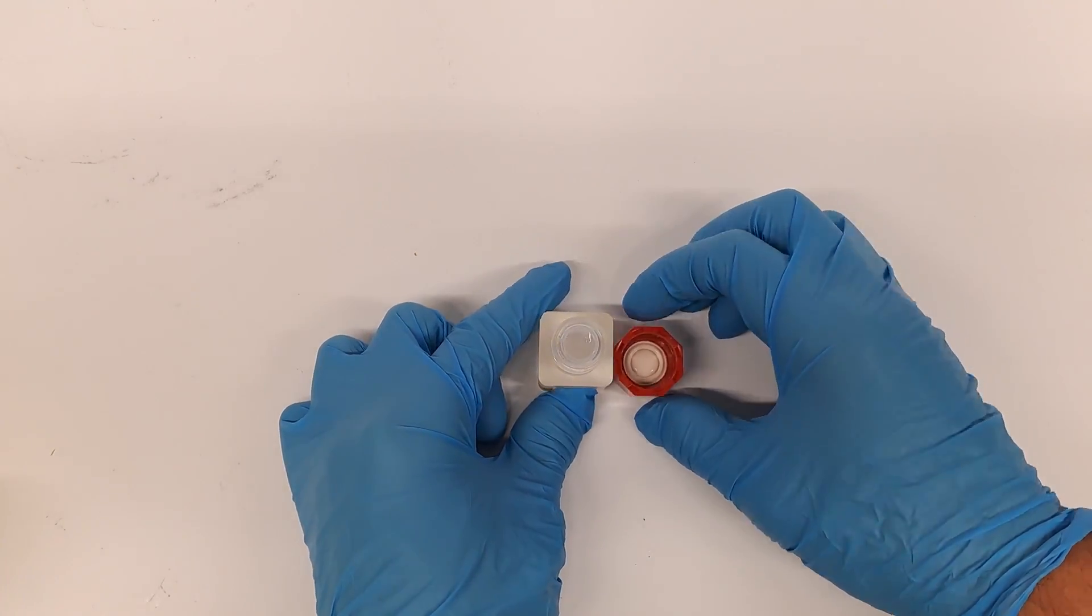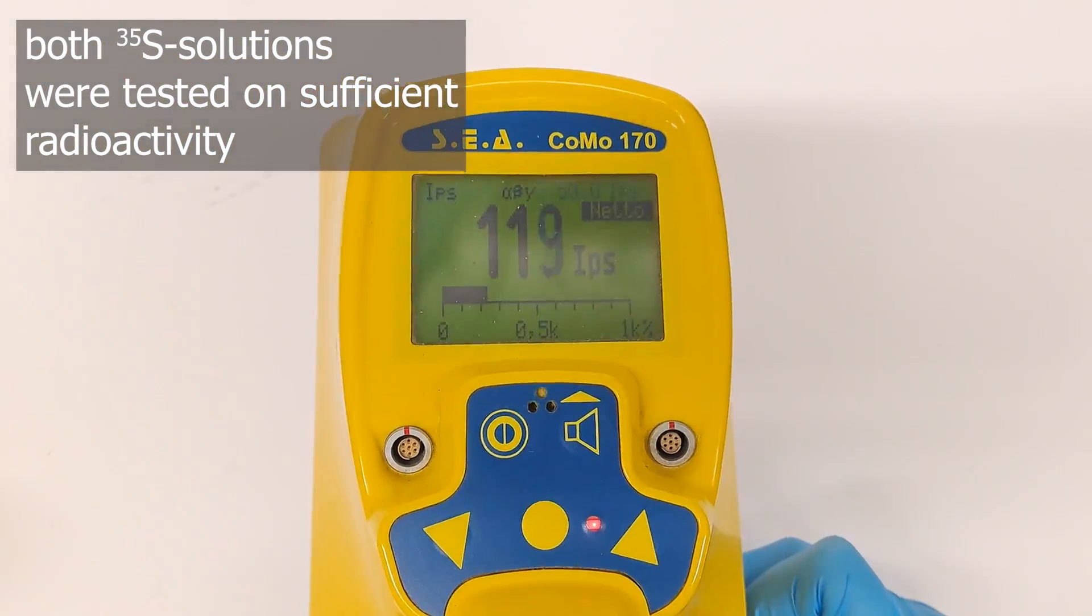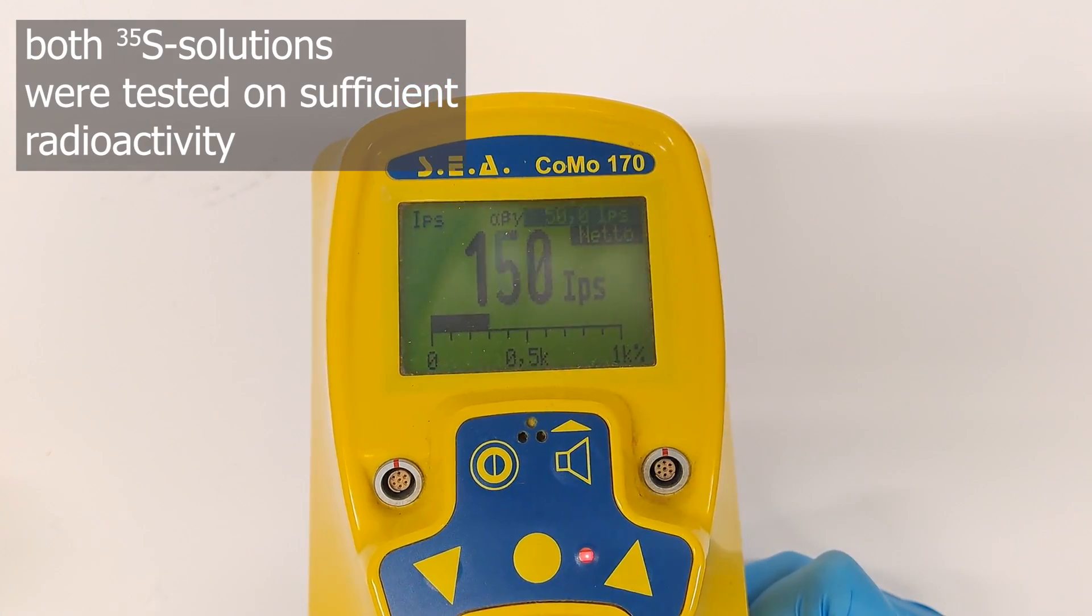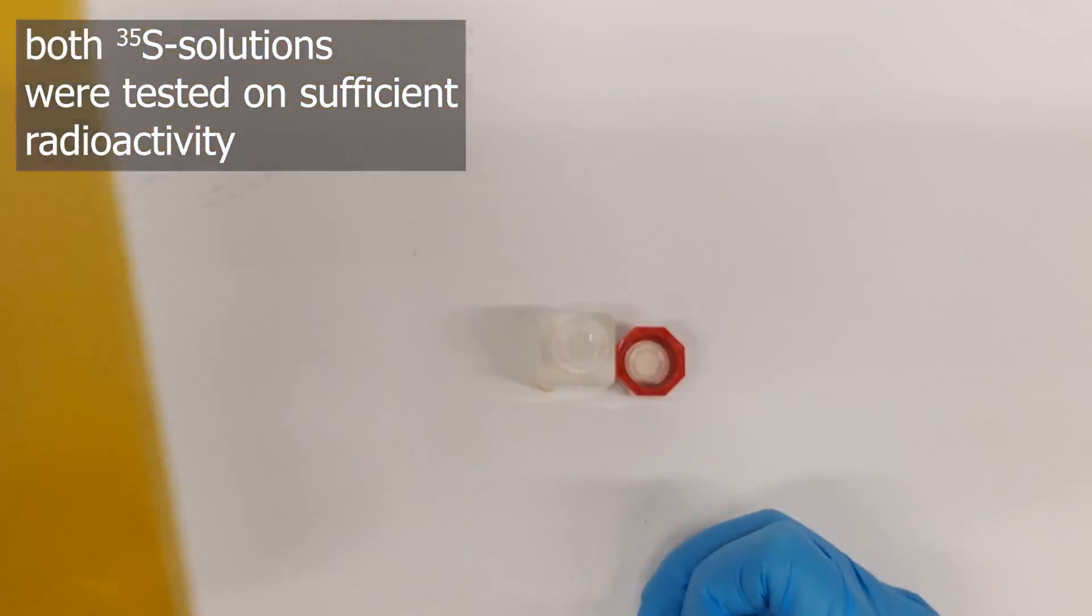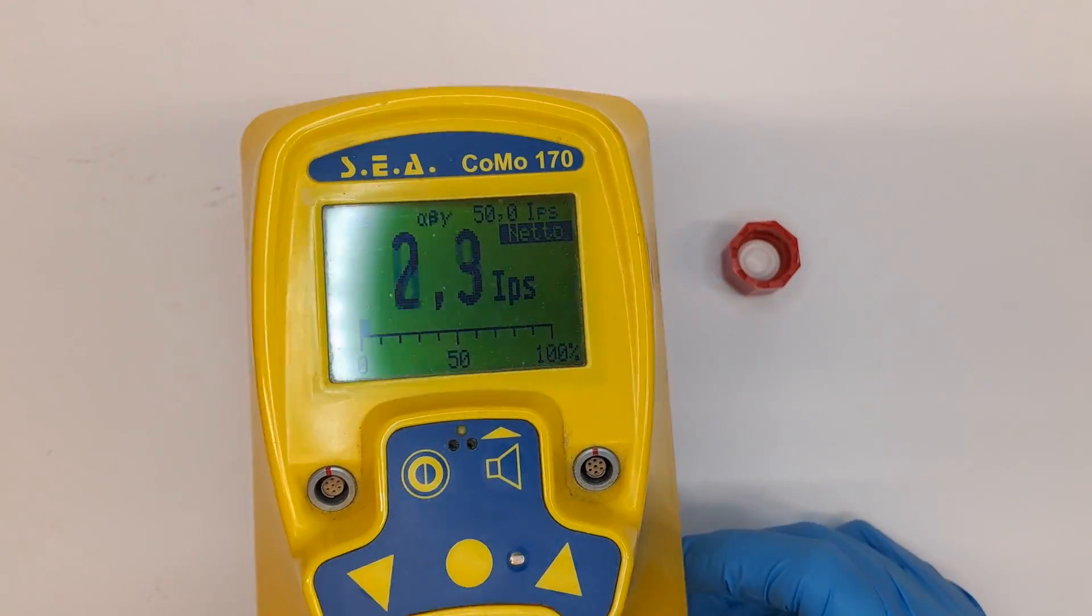Even the low energy betas have some range in the air that allows them to reach the detector. I've mentioned still radioactive for a reason. Sulfur-35 has a half-life of 90 days.